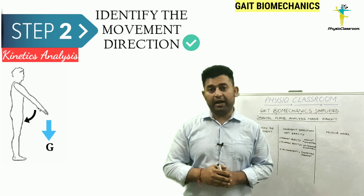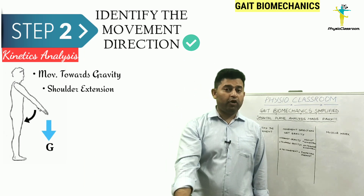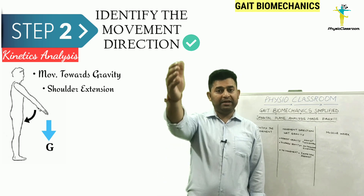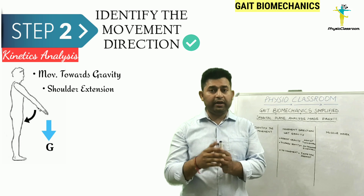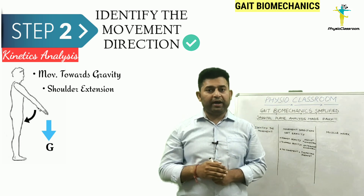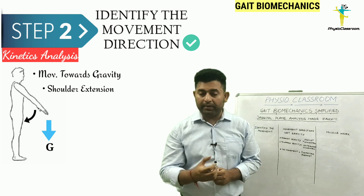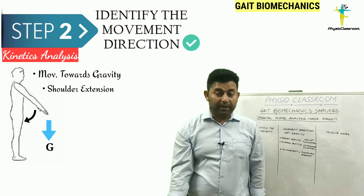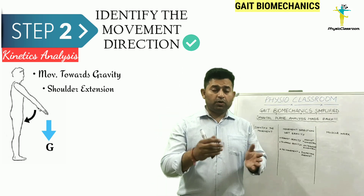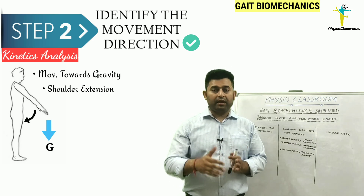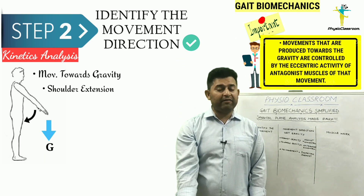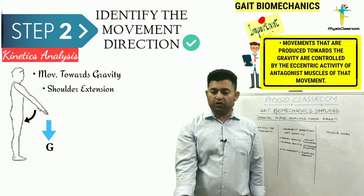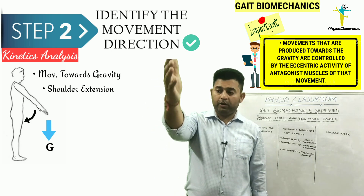Now let's take up the second situation for kinetic analysis. If I bring my hand down from the raised position, I first analyze the motion: extension from 90 degrees flexion to neutral — so 90 degrees of extension has taken place at the shoulder. Then I identify the direction with respect to gravity. When I was lowering my shoulder, my movement was taking place towards gravity. The second important point is that whenever movement takes place towards gravity, it need not be produced but controlled.